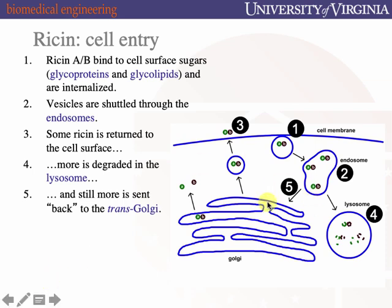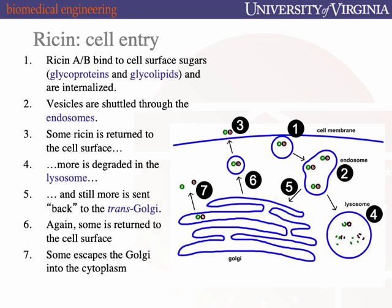The trans-Golgi environment is conducive to conformational changes of the ricin heterodimer and allows the ricin toxin to escape from inside the Golgi apparatus into the cytoplasm. All of the interiors of the vesicles along the way were oxidizing, but once released from the Golgi into the cytoplasm — a reducing environment — the disulfide bond between ricin A and ricin B is broken, and now there's free ricin A enzyme in the cytoplasm.